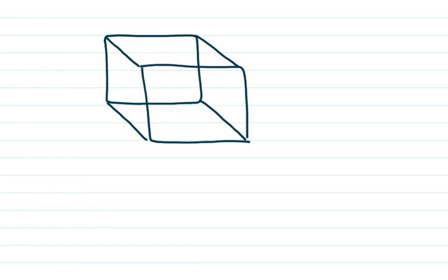We're focused on volume today. We've been talking a lot about area in other videos, so let's talk about what volume is. Volume is how much something can hold, and it applies to three-dimensional figures. A rectangular prism is a 3D figure, and this box can hold liquid, things — whatever it is.